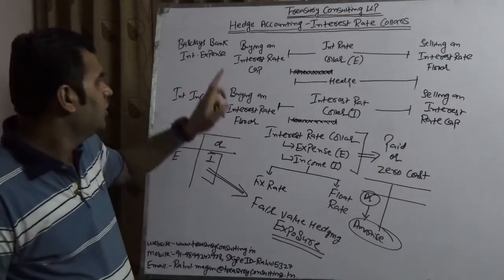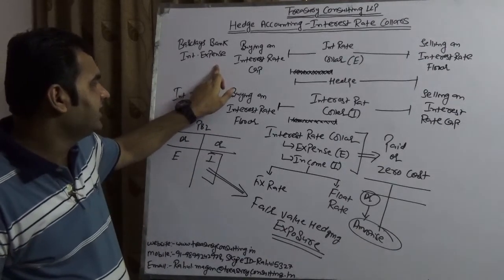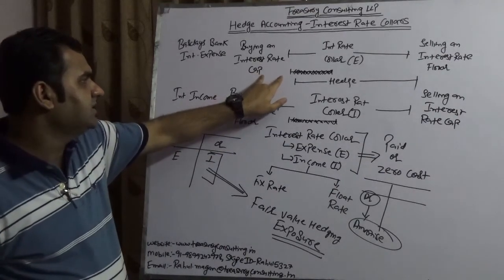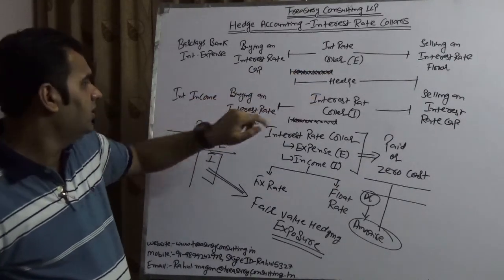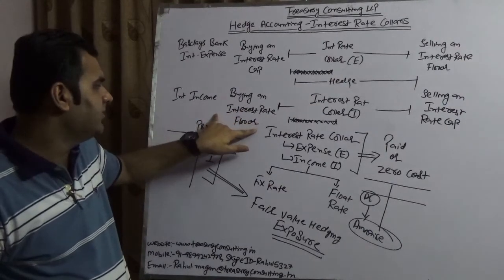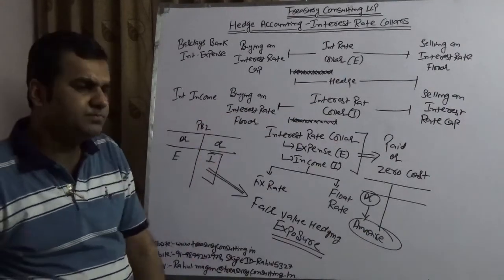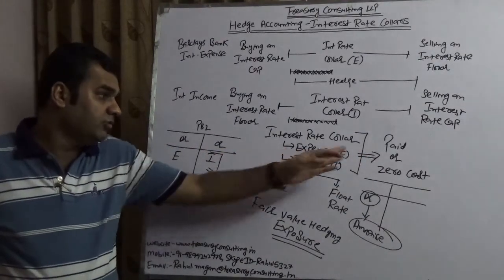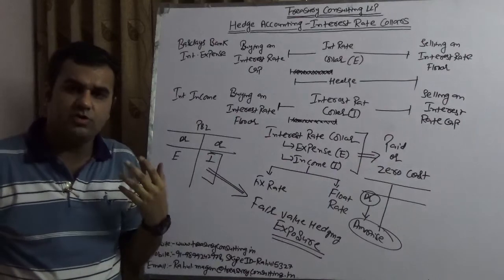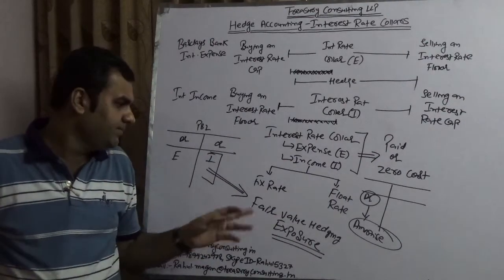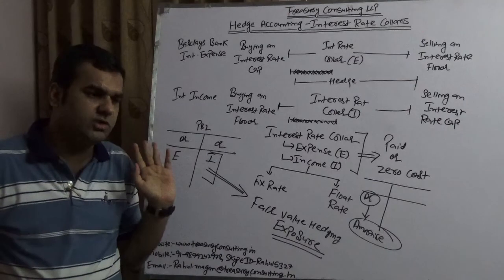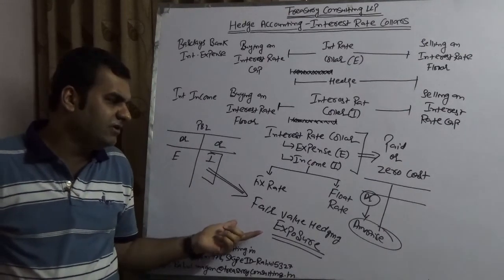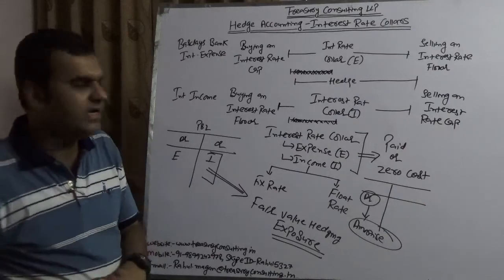The purpose of this video is to let you know that under IFRS 9, especially in interest rate collars, such structures are possible. You can create an interest rate collar for expense — buying a cap and selling a floor — or for income — buying a floor and selling a cap. It could be paid or zero cost, and it could be fixed rate or floating rate. That gives a total of four combinations, and collectively this is known as fair value hedging.